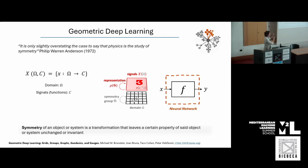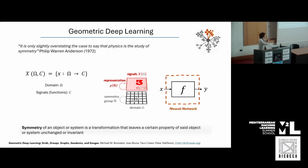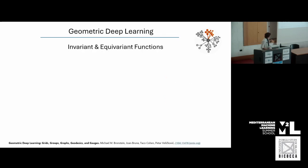The idea is that we can leverage some of the symmetries that appear in our domain — this homogeneous grid of pixels — to help make those predictions. For example, if we take number three and move it in the image, we want our function to still map to the same label. So if we know that the group of symmetries of translations needs to be preserved when we make the prediction, we can find architectures that do that.